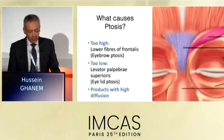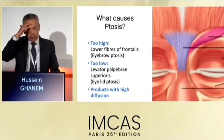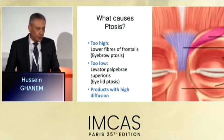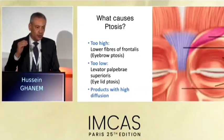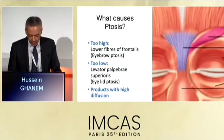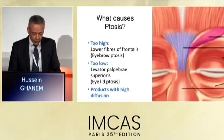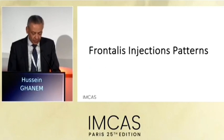What causes ptosis? When we inject the glabella, if we go too high, we get the lower fibers of the frontalis and we get brow ptosis. If we go low, we get the levator palpebrae superioris and we get eyelid ptosis. So too high, we drop the eyebrows; too low, we drop the eyelids. And of course, if you use a generic product with high diffusion, we would get drooping of both the eyebrows and eyelids.